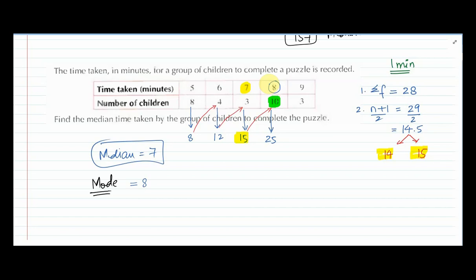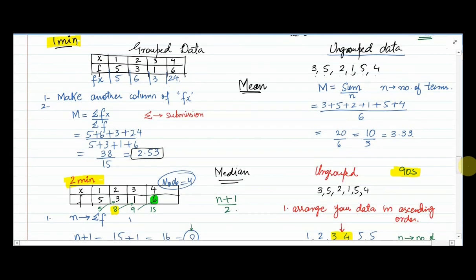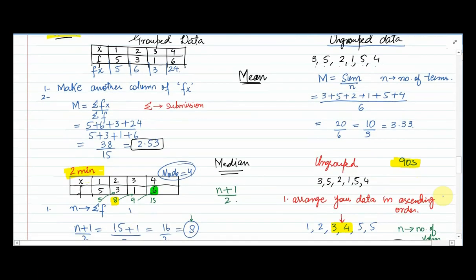For mode in this same question: the highest frequency is 10, but mode is not 10 — mode is the class value 8, which is the one with the highest frequency. Maintain your lecture copies from the beginning of the session for quick revision during assessments and midterms. In the next class we will start from the worksheet. Until then, revise all working formulas. See you next class, take care.